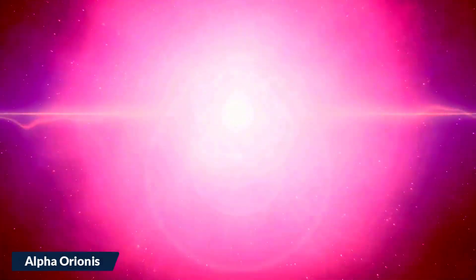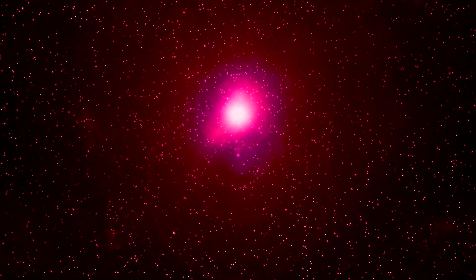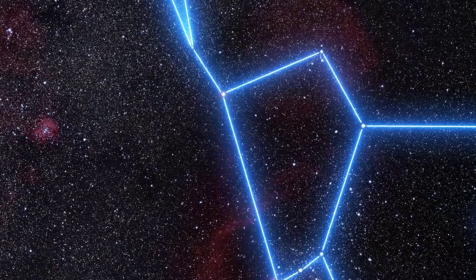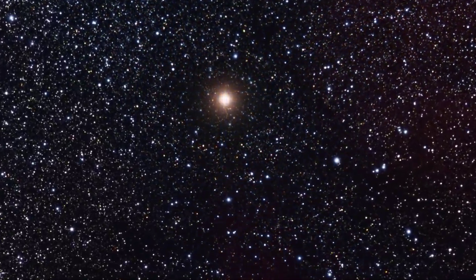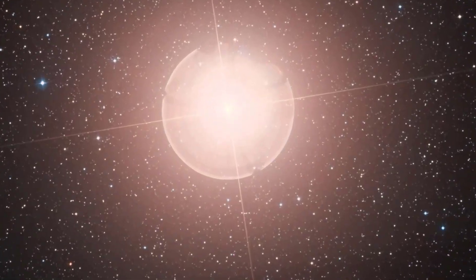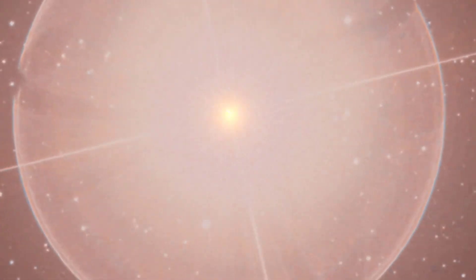Betelgeuse, also known as Alpha Orionis, is one of the most fascinating and anticipated astronomical events in the sky. This brilliant ruby red star is located in the upper right shoulder of winter constellation Orion the Hunter and is known for its variable behavior and peculiar name. Despite not being the brightest star in the constellation, Betelgeuse's reddish color, size, and brightness make it a favorite among astronomers to observe and study.